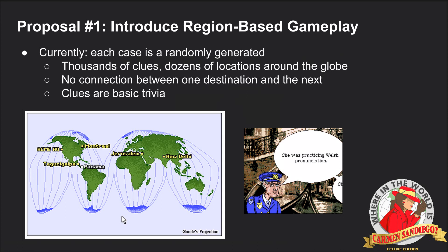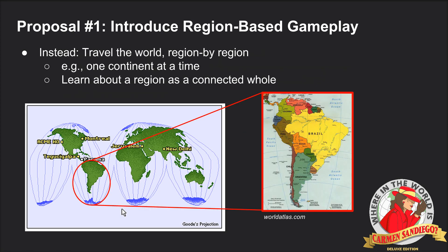The first idea is introducing region-based gameplay. Currently, each case is randomly generated — there's basically a big bucket of clues associated with different cities, and the game randomly chooses some to put together a case, so no two cases are the same. However, there's no connection between destinations. I think it would be better if the game instead traveled the world region by region — for example, South America, then Africa, then Asia — so you'd learn about the region as a connected whole.